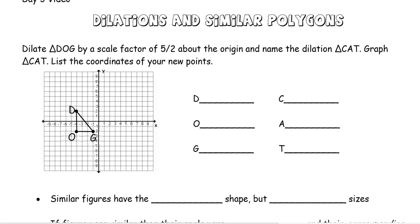When we talked about our transformations unit, we talked about rigid motions and how translations, reflections, and rotations all preserved congruency. But then we had one transformation that wasn't a rigid motion — that was dilation — and that dilation we said created these similar figures, and that's what we're going to look at more today.